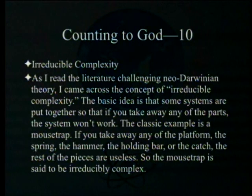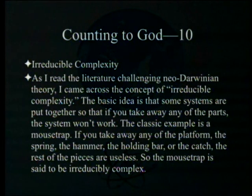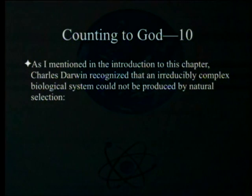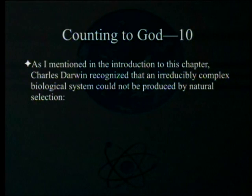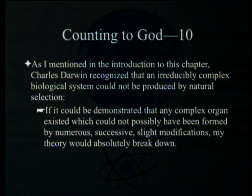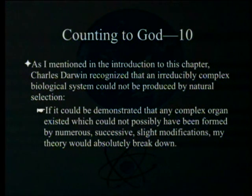The basic idea is that some systems are put together so that if you take away any of the parts, the system won't work. A classic example is a mousetrap — take away the platform, spring, hammer, holding bar, or catch, and the rest of the pieces are totally useless for catching a mouse. Charles Darwin himself recognized that an irreducibly complex biological system could not be produced by natural selection, writing: 'If it could be demonstrated that any complex organ existed which could not possibly have been formed by numerous successive slight modifications, my theory would absolutely break down.'